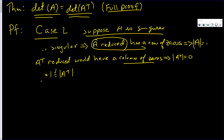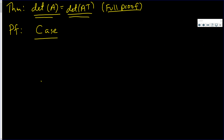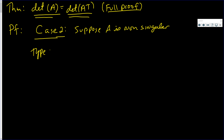Case 2 is a bit longer. Case 2: suppose A is non-singular. We're going to look only at matrix A's that are elementary matrices. Type 1 elementary matrix A: A interchanges two rows.